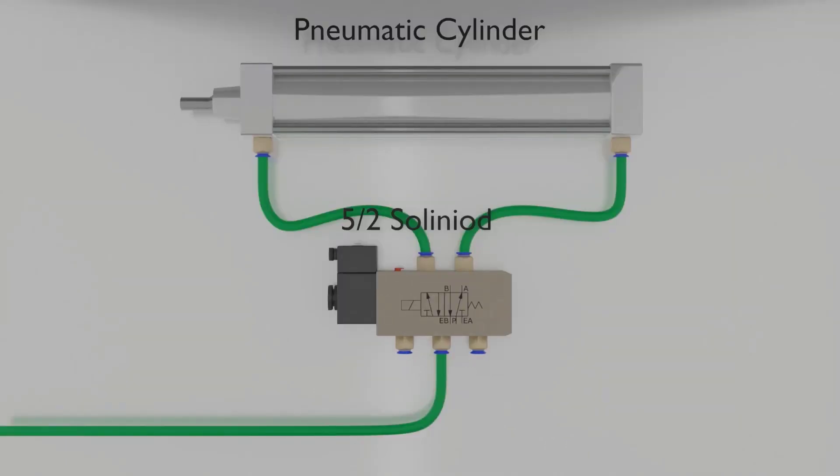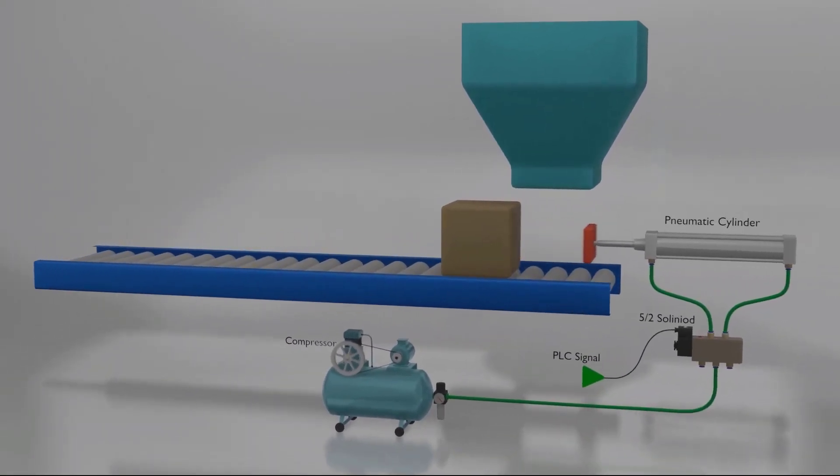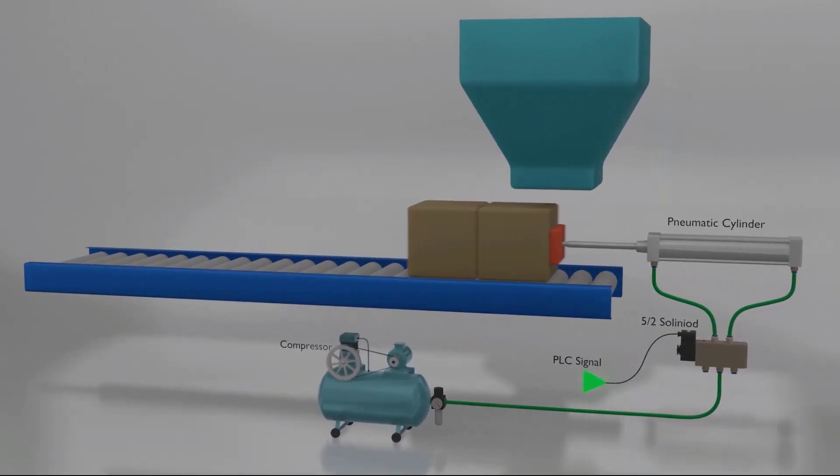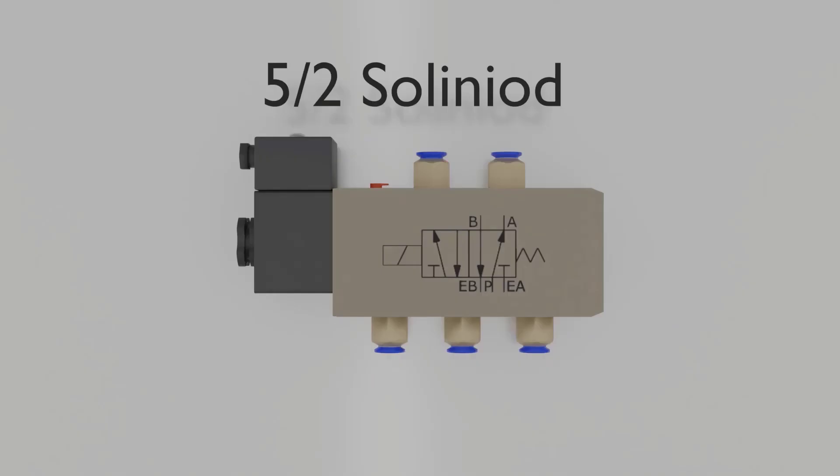Pneumatic solenoid valves are the most important component in the industry to control the linear motion of a pneumatic cylinder by supplying compressed air to the pneumatic ports of the cylinder. There are different types of these valves. The most commonly used solenoid valve is the 5/2 way valve.